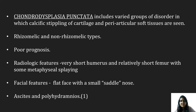Chondrodysplasia punctata includes various groups of disorders in which calcific stippling of cartilage and periarticular soft tissue is seen. It is of two types: rhizomalic and non-rhizomalic. It has very poor prognosis. Radiological features include very short humerus and relatively short femur with some metaphyseal flaring. Facial features include flat face and small saddle nose. Ascites and polyhydramnios may also be seen.